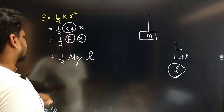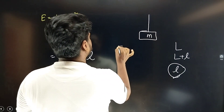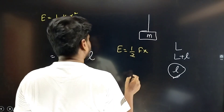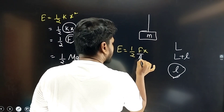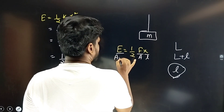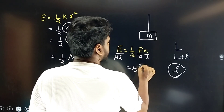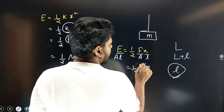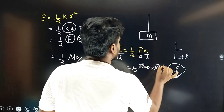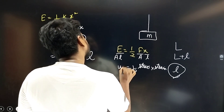This is a very good formula: half F into x, where F is force and x is the extension. Force upon area is stress, and change in length upon original length is strain. So half into stress into strain gives the energy per unit volume — the energy density.